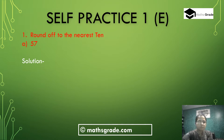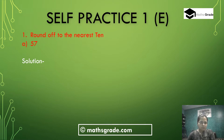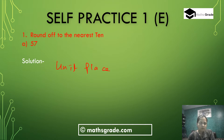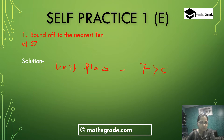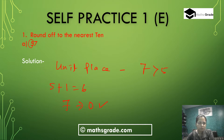Question 1, part A: round 57 to the nearest 10. In 57, the unit place digit is 7, and 7 is greater than 5. So we add 1 to the 10th place digit: 5 plus 1 is 6. Then write 0 in the unit place. So 57 rounded to the nearest 10 is 60.